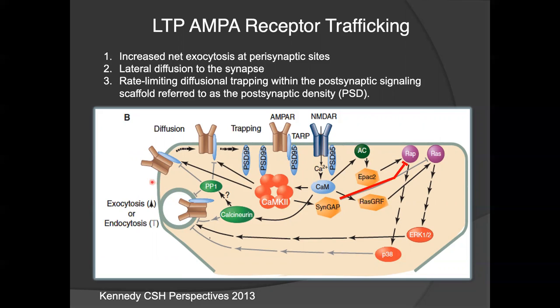Step two is the lateral diffusion of these AMPA receptors into the post-synaptic density. Step three is the diffusional trapping of these AMPA receptors in the post-synaptic density, and this step is rate-limiting.